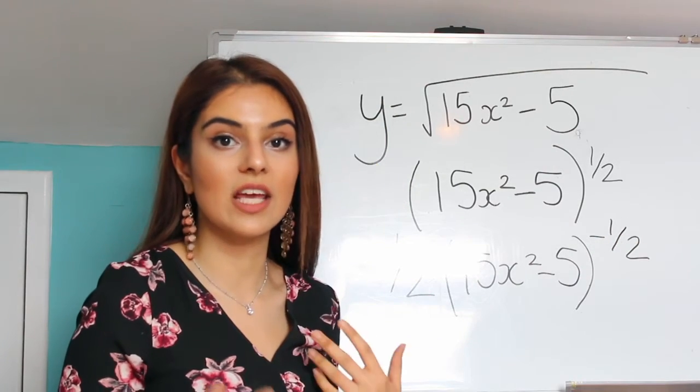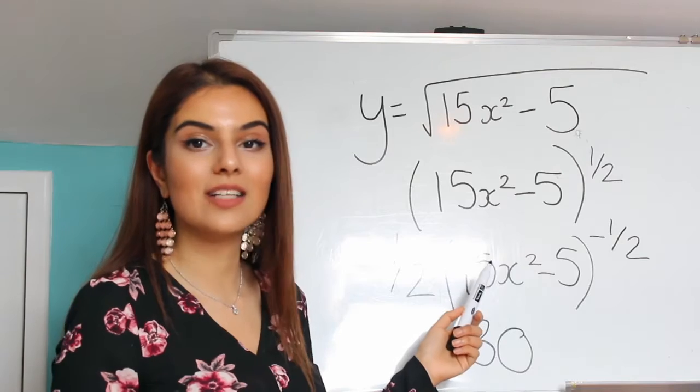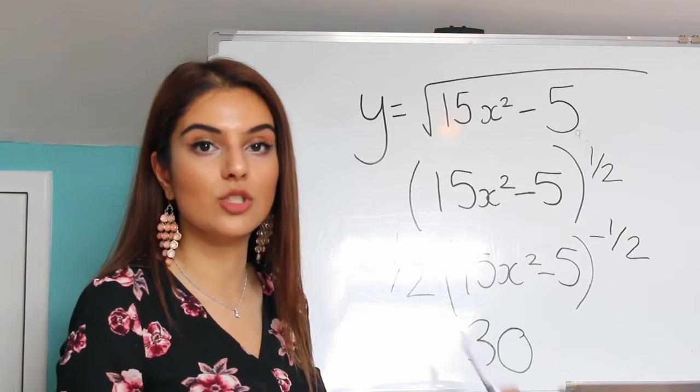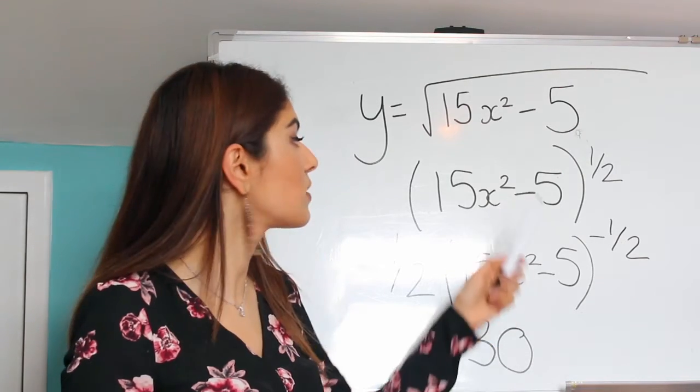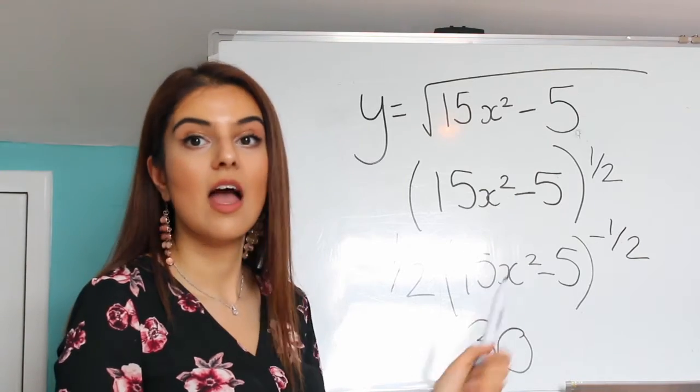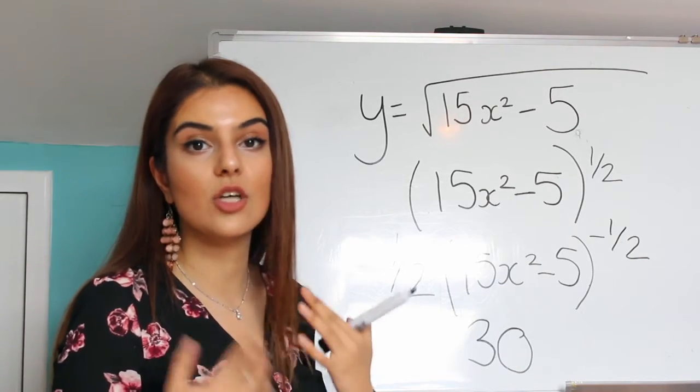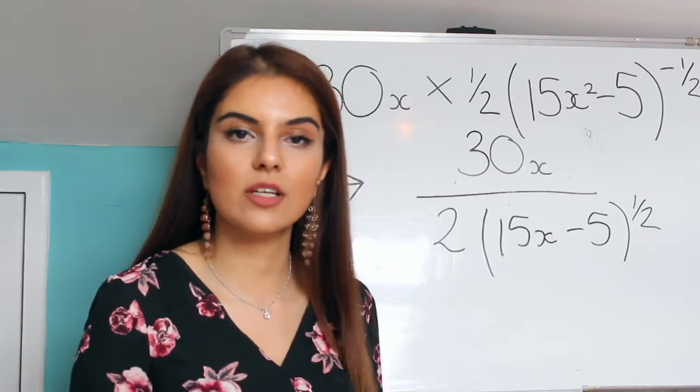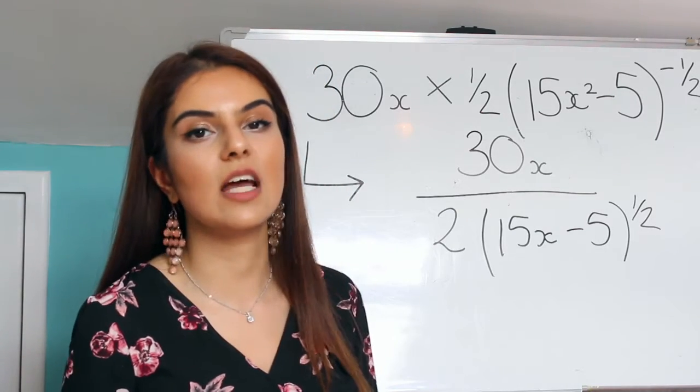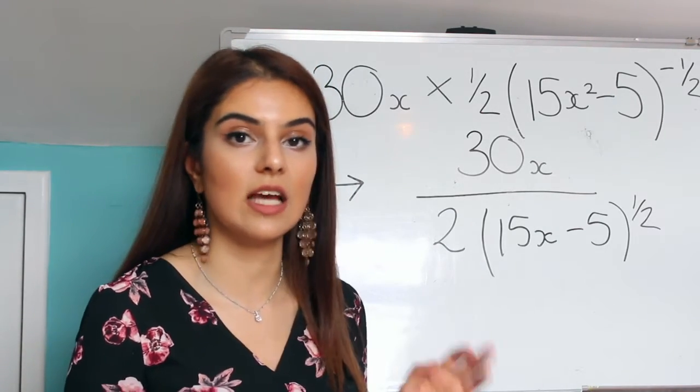And now we would differentiate the inside. 15x squared minus 5 differentiate would just be 30x because it would be the 2 times the 15. The constant would cancel out and so would the x. Now that we've differentiated the two different compositions, our final step is just timesing the two together.